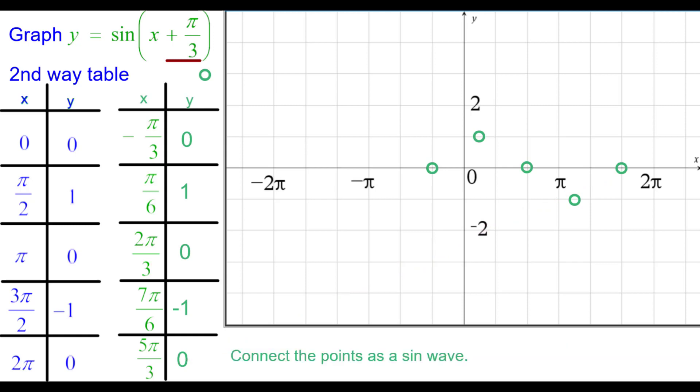Connect the points as a sine wave. Concave down. Concave up. This is one period of the wave. We'll plot another one to the left by going back a period 2 pi from each point.